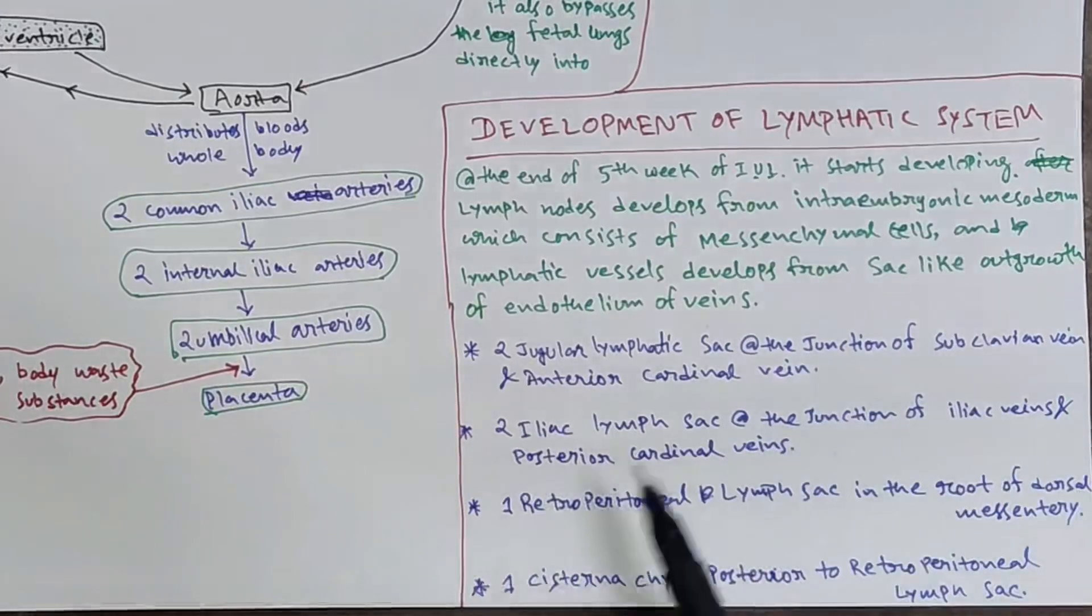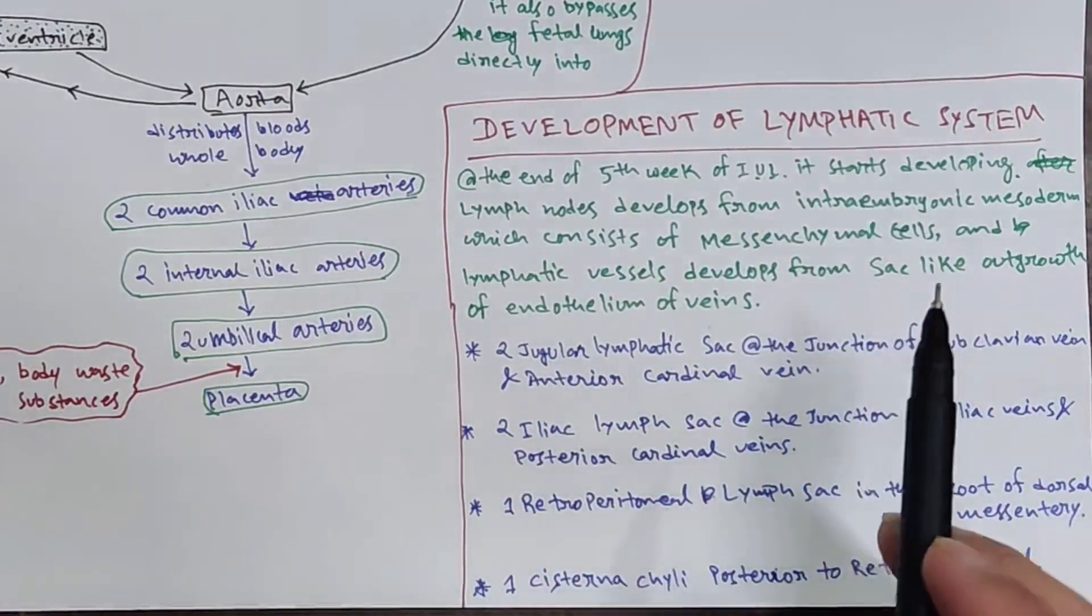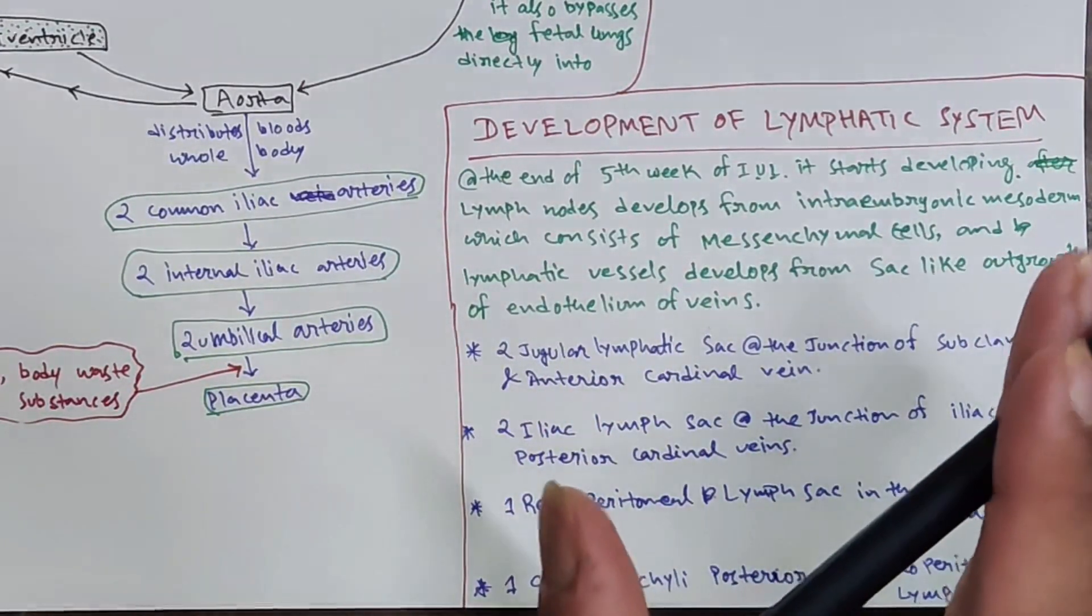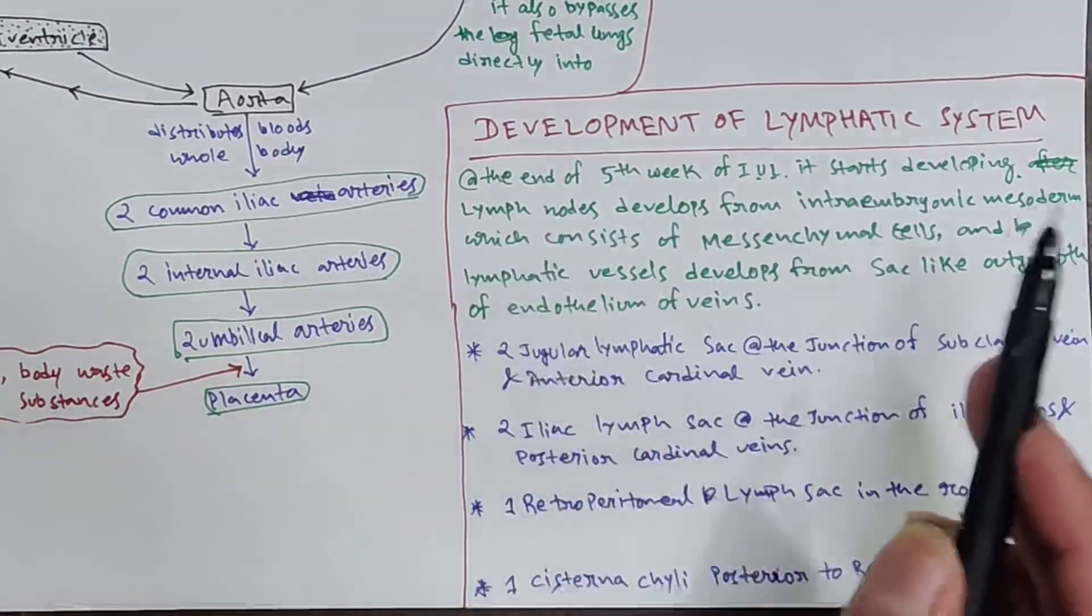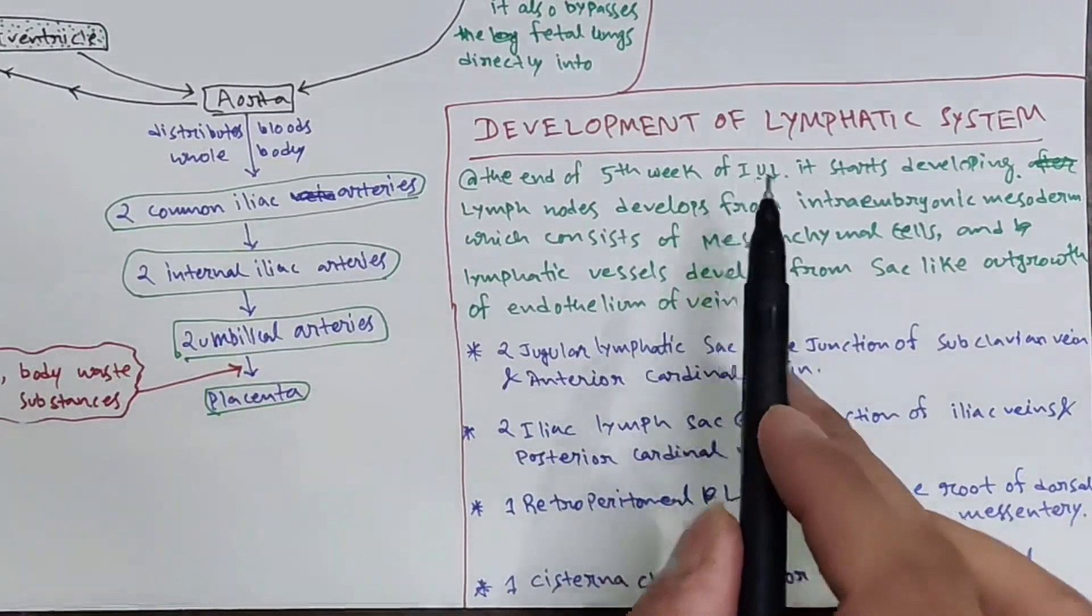Hello and welcome. Today's topic is development of the lymphatic system. The topic is very short and simple. Try to understand at the end of the fifth week of intrauterine life, the lymphatic system starts developing.